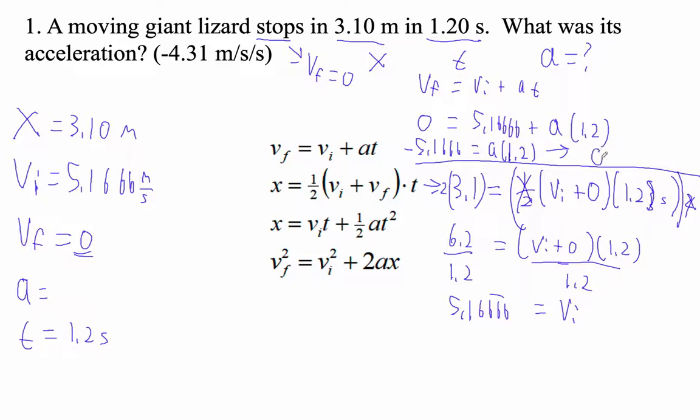And I get that the acceleration is equal to negative 4.30 and a lot of fives. A lot of fives. Which I guess we only have three digits. So we'd say negative 4.31.